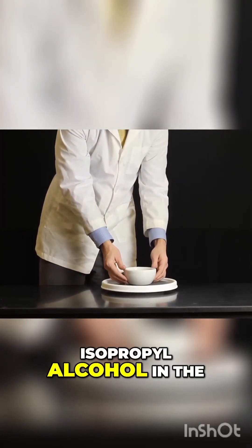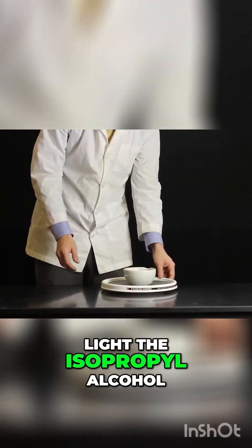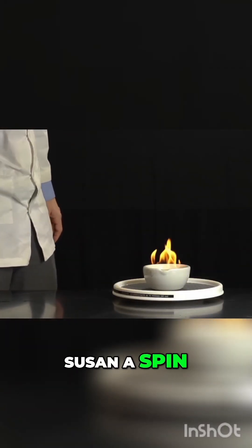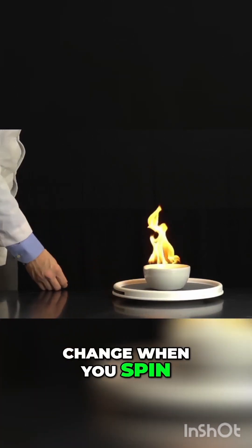Next, place the bowl of isopropyl alcohol in the middle of the Lazy Susan. Light the isopropyl alcohol and give the Lazy Susan a spin. What you'll notice is that the flames don't change when you spin the Lazy Susan.